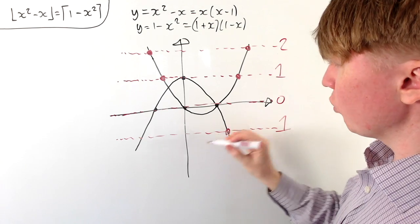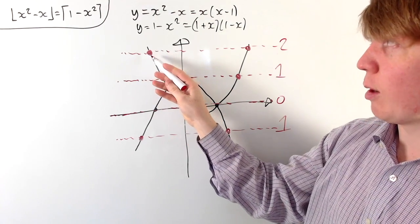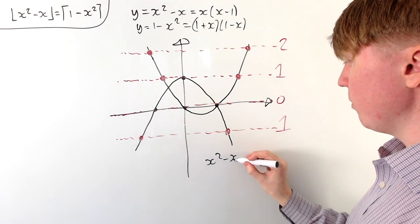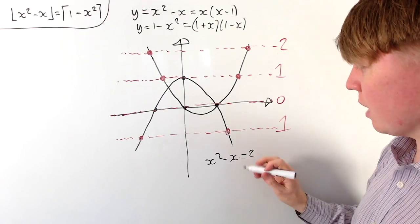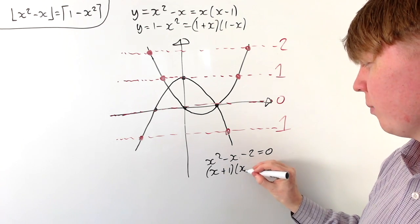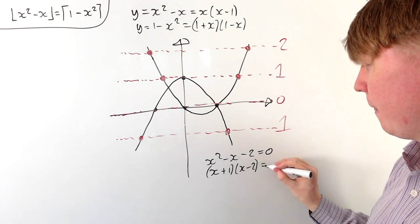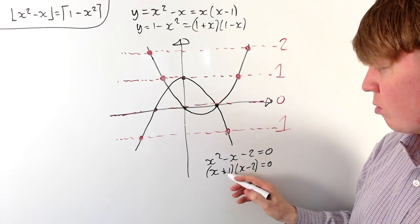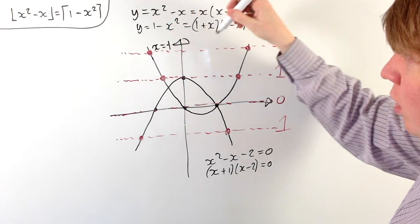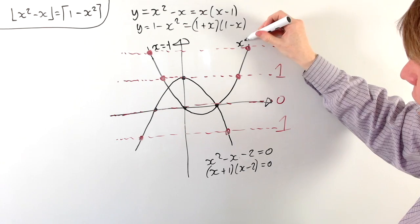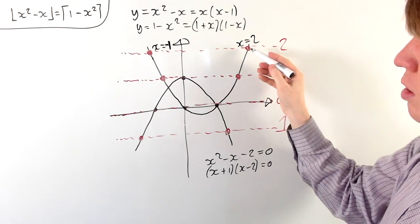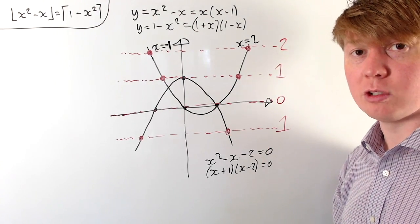Starting with where x squared minus x equals 2: we write x squared minus x minus 2 equals 0, which factorises as (x+1)(x-2) equals 0. So we get solutions when x is minus 1 and when x is positive 2. These are the x-coordinates of the points on the graph where x squared minus x equals 2.